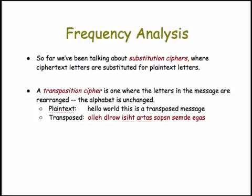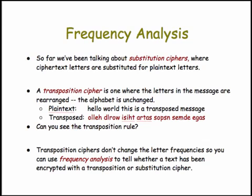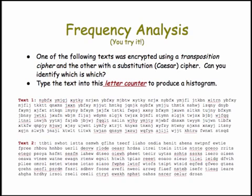For example, if you have a message with 100 letters, there are basically 100 factorial ways those could be rearranged, so this is quite a good way to encrypt text. If we take the message 'hello world, this is a transposed message' and transpose it, you would see something like this. Can you see the transposition rule? I'm simply reversing every five-letter sequence in the original message — so 'hello' becomes this, 'world' becomes this, and so on. One important fact to observe is that the frequencies don't change, so there are just as many E's in the transposed message as in the original, and that would be true for the entire transposition cipher. So we can use frequency analysis to determine which method was used in encrypting a message.